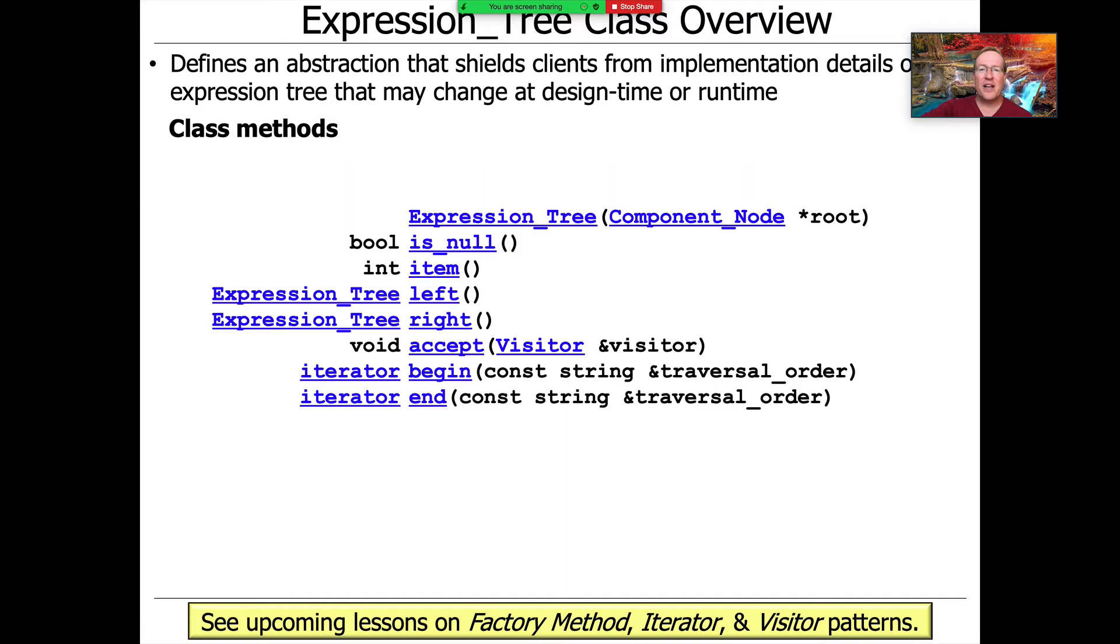We're going to define a class called the expression tree class. This is the API, the interface of the expression tree class. The expression tree is the abstraction in the bridge pattern, and what it does is it shields the clients from all the implementation details in the implementer hierarchy on the right-hand side. Those hierarchies can change at runtime or at compile time, design time, and so on, without breaking client code.